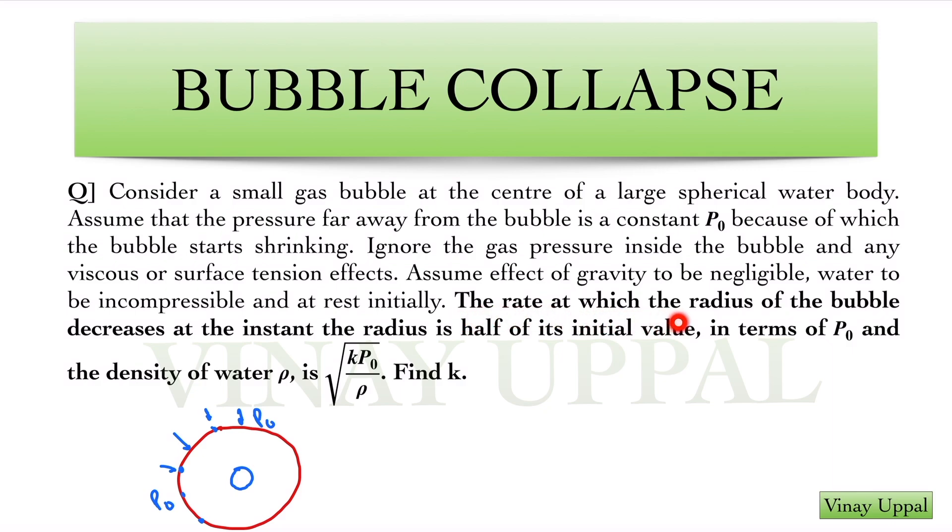The rate at which the radius of the bubble decreases at the instant the radius is half of its initial value, in terms of P0 and the density of water rho is given, and we need to find this value of k. So we need to find basically the rate at which the radius is decreasing.